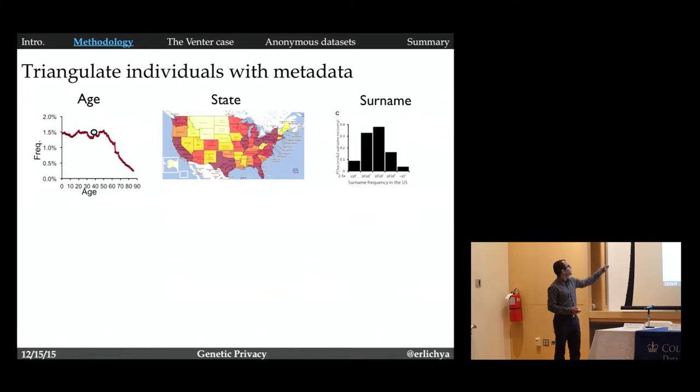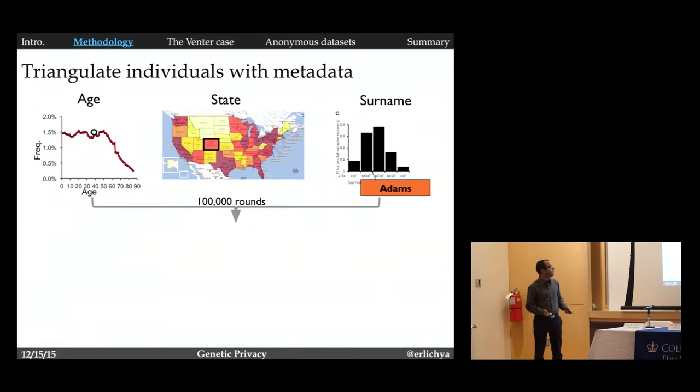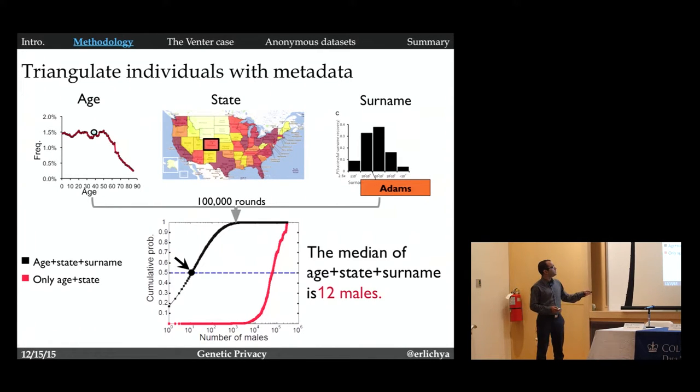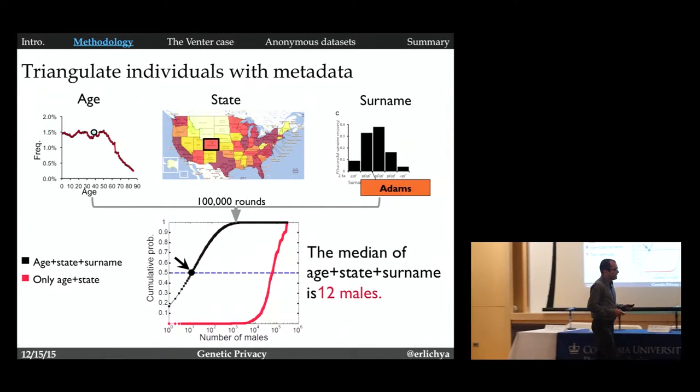We did a simulation using the U.S. census data. We look at the distribution of ages in the U.S., the number of people in each state. We also took the covariance between age and state because in Florida, people are older. Let's say we took someone that is age 40, in Colorado, and surname is Adams. We asked how many males would match such a profile. We repeated this simulation 100,000 rounds. We found that if I have the age, state, and surname, I get the median size of my list is 12 males. When I have 12 males, at that point, any other piece of information would allow me to identify the individual. I can even use social engineering. I can call each one of these 12 males and ask them, did you participate in a genetic study? Maybe not me, but someone with a nice accent can be more convincing.